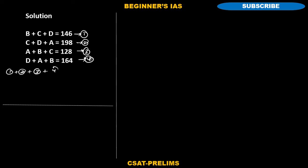What you are going to do is just add the LHS and the respective RHS. Here how many A's are present? One, two, three - therefore three A's are present, and then three B's are present, three C's are present, and then three D's are present in the LHS. At the corresponding RHS, 146, then 198, 128, and then 164. Just take 3 as a common factor.